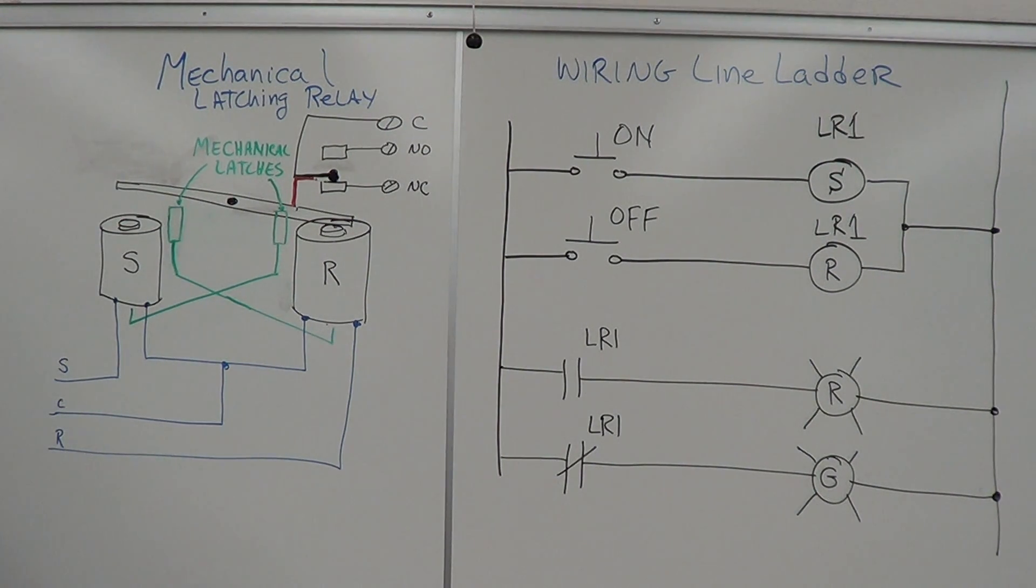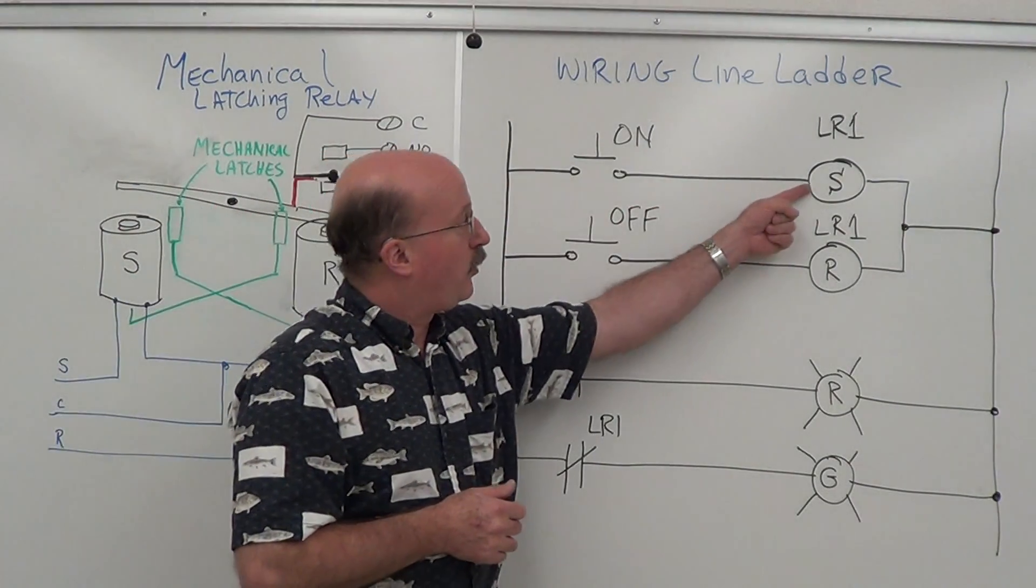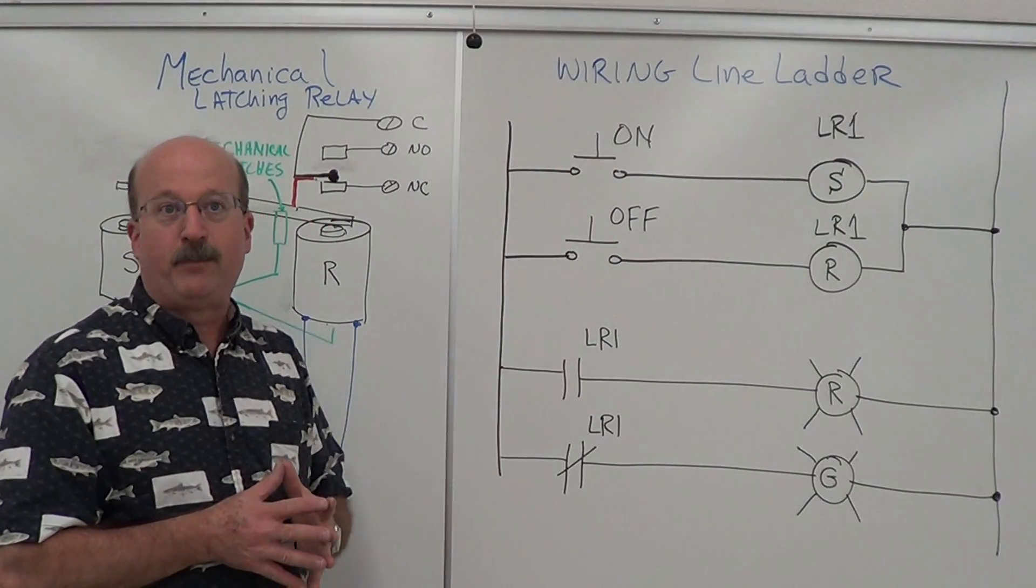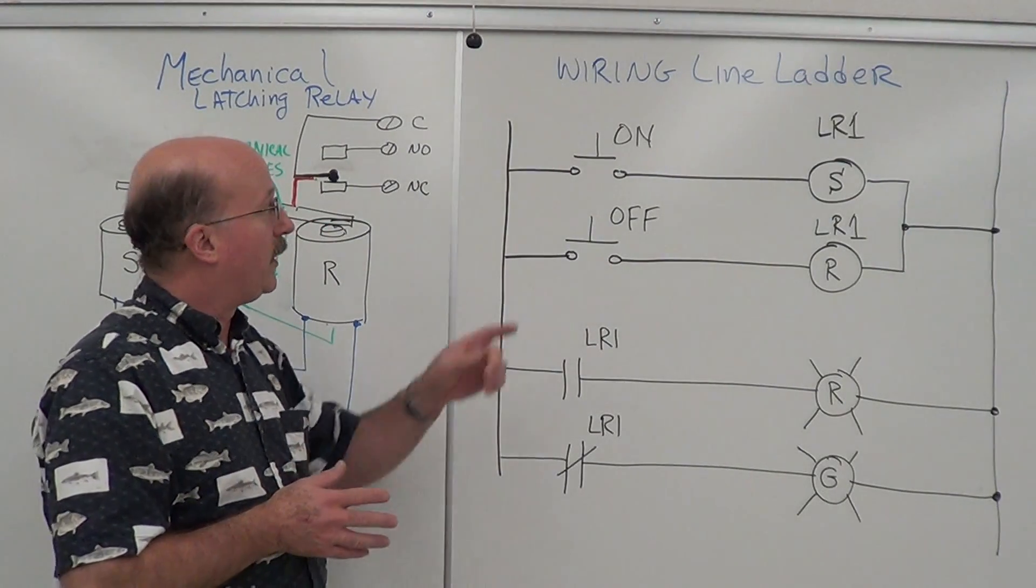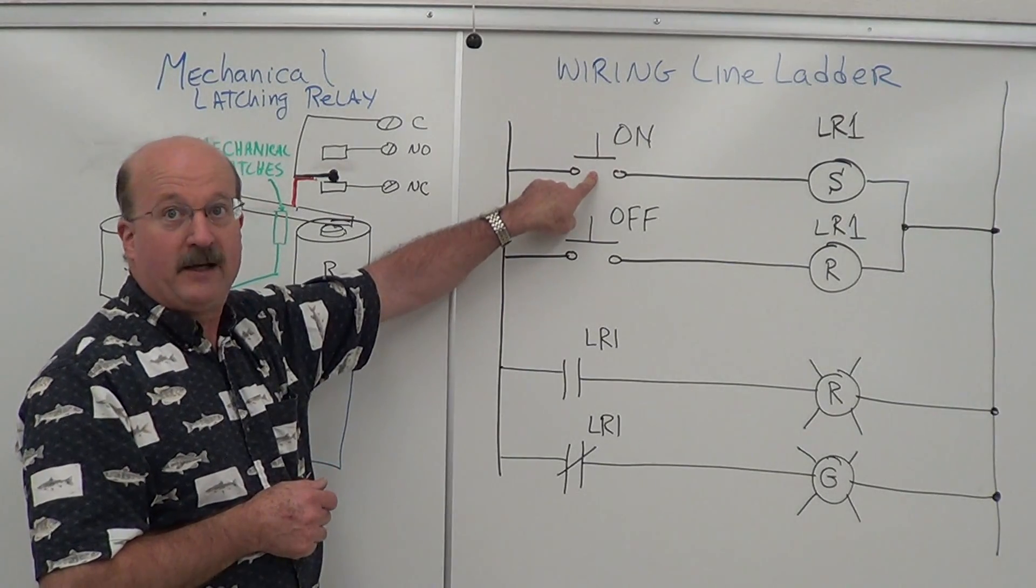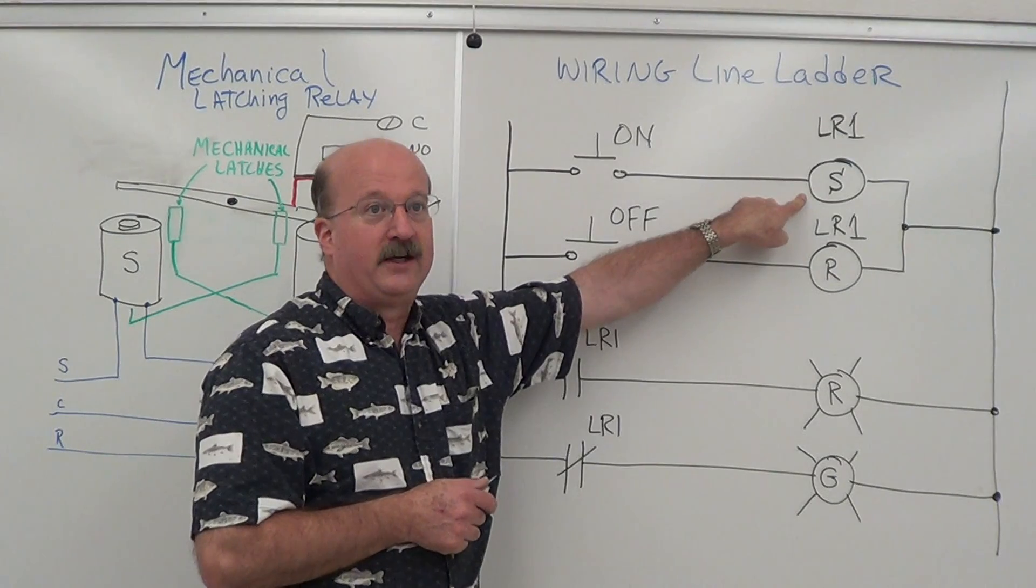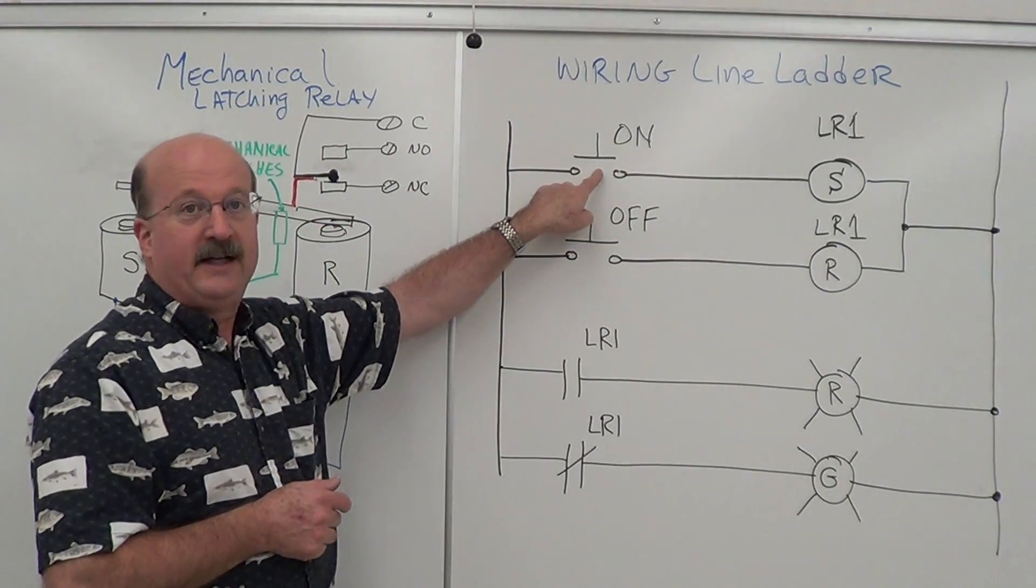Now if we look over here on the line ladder, we've got our two coils. They each have momentary push buttons energizing them. So if I want to turn the relay on, I push this button here, energize the coil, it'll switch and latch on. Then when I release the button, it will stay on.